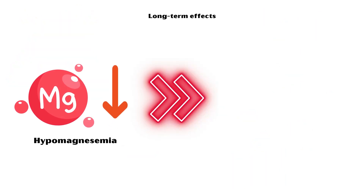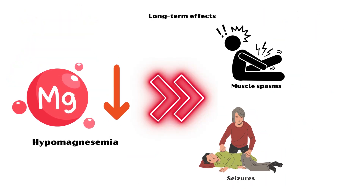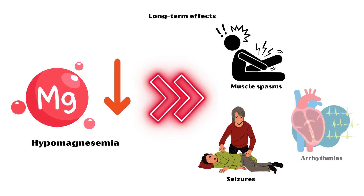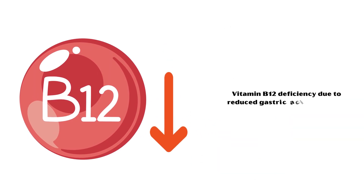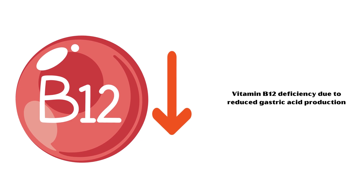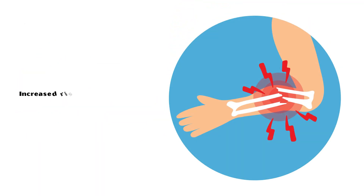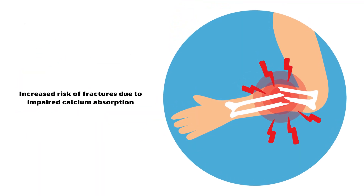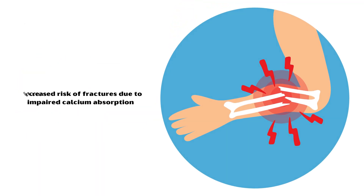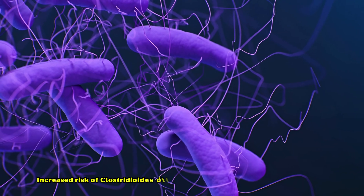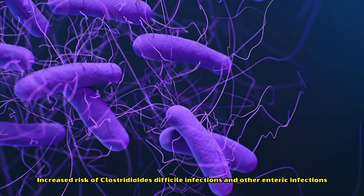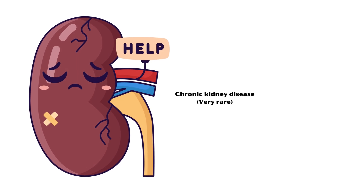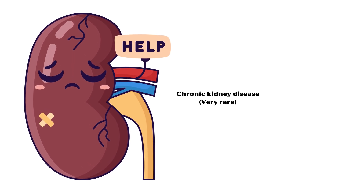Long-term effects include hypomagnesemia, which can lead to muscle spasms, seizures, or arrhythmias. Additional long-term concerns include Vitamin B12 deficiency due to reduced gastric acid production, increased risk of fractures due to impaired calcium absorption, increased risk of Clostridioides difficile infections and other enteric infections, and very rarely, chronic kidney disease.